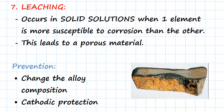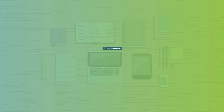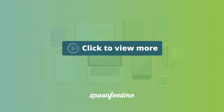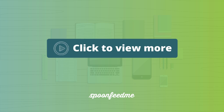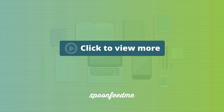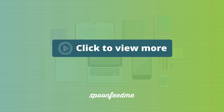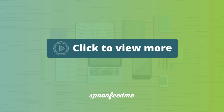Let's look at something a bit larger scale. We call this one leaching, and it occurs specifically in solid solutions when one element is more susceptible to corrosion than the other element. Just to remind you, a solid solution is when we have a mix of two or more different elements.